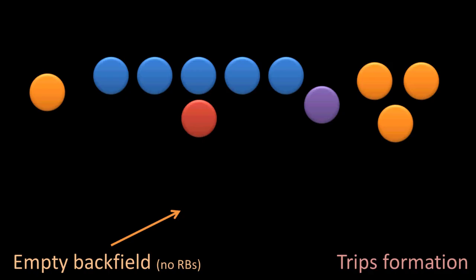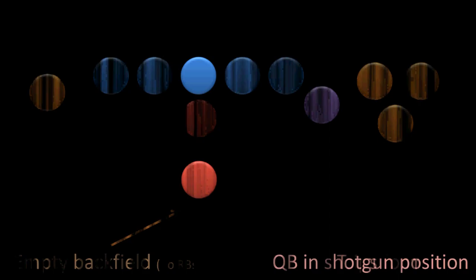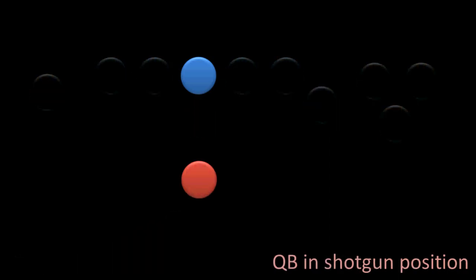Now, one common variation that we'll see with the trips formation is that the quarterback will not be under center. And if he's not under center, then he will be in the shotgun formation. So when you hear that a quarterback is in shotgun, it means that he is a few feet behind the center rather than right up behind him.